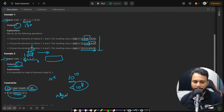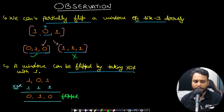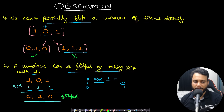All array items are either zero or one. Key observation: we cannot partially flip a window of size three. If you have one, zero, one and flip the entire window it becomes zero, one, zero — you cannot selectively flip certain items within the window. A window can be flipped optimally using XOR with one: if a bit is set, XOR with one unsets it, and vice versa. So we XOR all three values with one to flip the window, which is faster than an if-else statement.